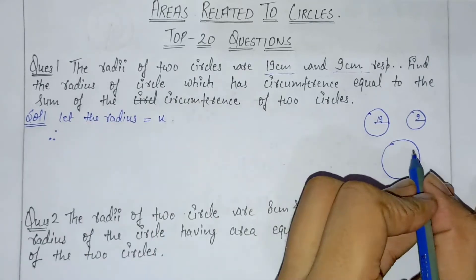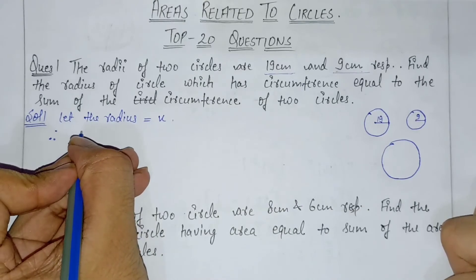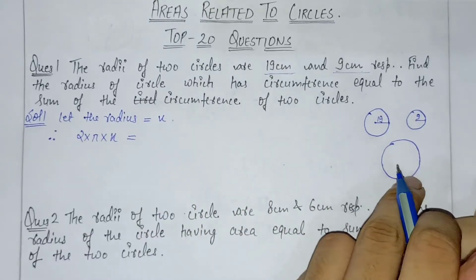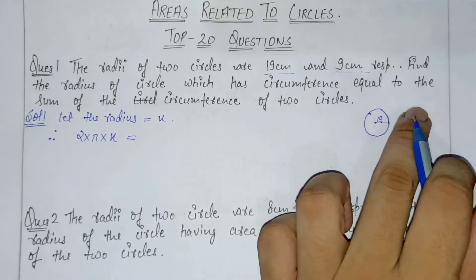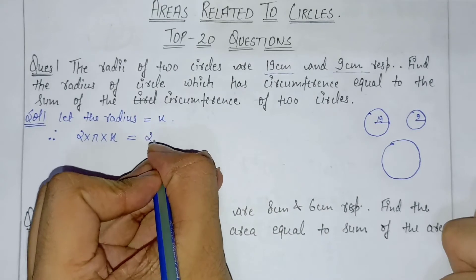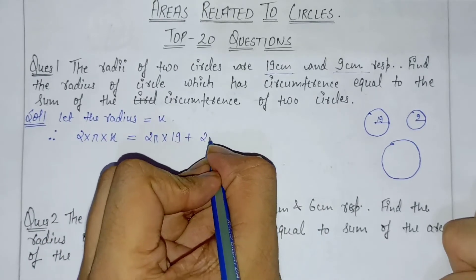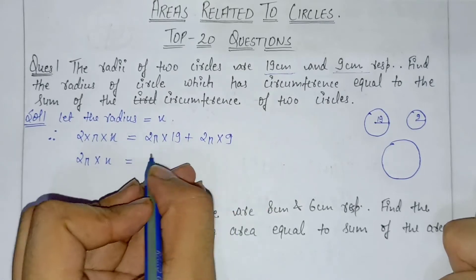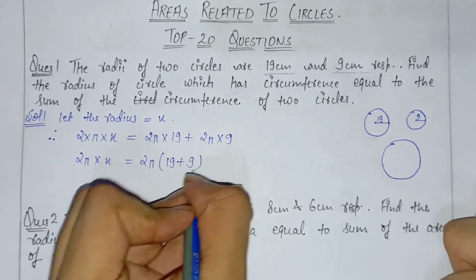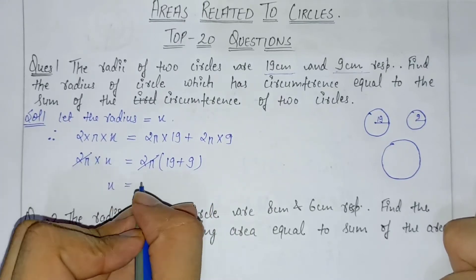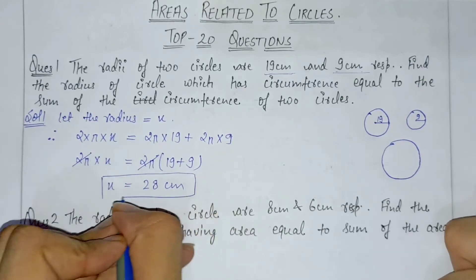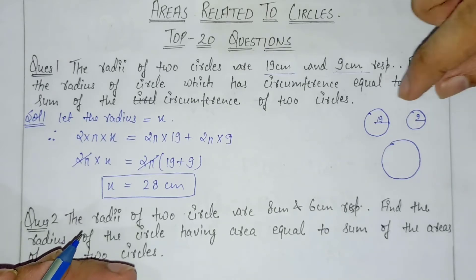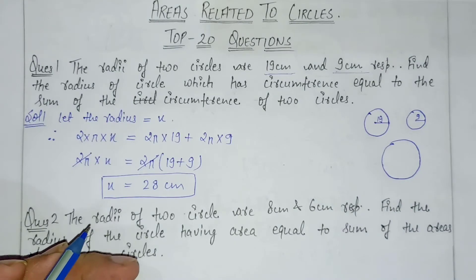The circumference of the new circle is 2πx, which equals the sum of the circumferences: 2π×19 plus 2π×9. So 2π×x = 2π×19 + 2π×9. The 2π cancels, and x is equal to 28 cm. So a circle of radius 28 cm has a circumference equal to the sum of the circumferences of the two given circles. That was question number 1.